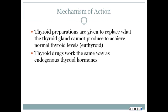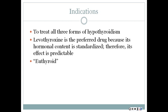Thyroid drugs work the same as endogenous thyroid hormones. They require monitoring of serum TSH and free thyroid hormone levels to determine appropriate dosage of replacement therapy — it's a very fine line, so there has to be a lot of monitoring to make sure that pendulum doesn't swing in the opposite direction into hyperthyroid. These medications are used to treat all three forms of hypothyroidism. Levothyroxine is the preferred drug because its hormonal content is standardized and therefore its effectiveness is predictable. "Euthyroid" is the term used for normal thyroid gland function — the goal is to achieve normal thyroid hormone levels.